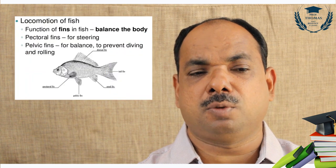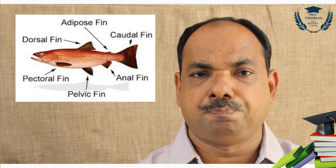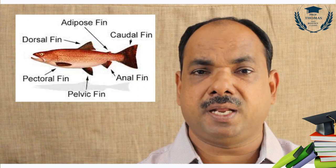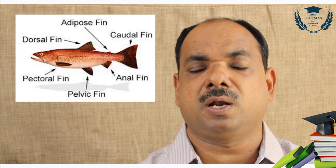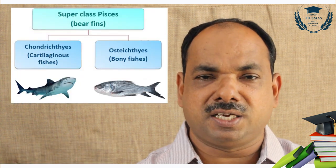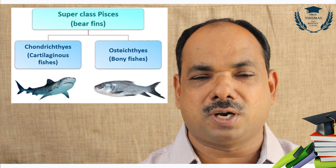Fishes move in a school or shoal in a group. Their bodies are pointed at both ends, called a streamlined body. Fins help in locomotion. They have pectoral fin, pelvic fin, dorsal fin, anal fin, and caudal fin.